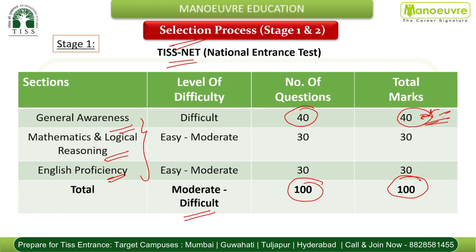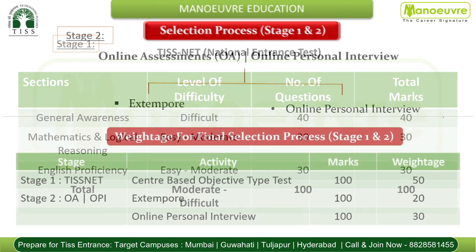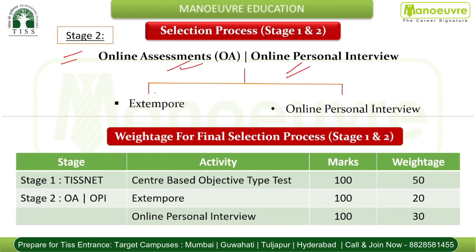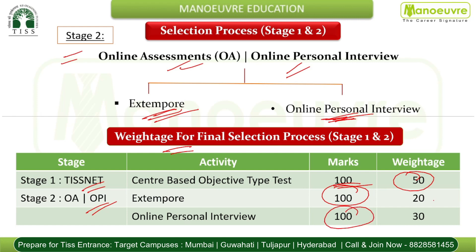Stage two of the TISS selection process involves an extempore and an online personal interview. If you are not shortlisted from stage one, you are not eligible to pursue the program — so stage one is equally critical. The weightage for final selection is: TISSNET objective test — 50 marks (100 marks scaled); Extempore — 20 weightage (100 marks); Online Personal Interview — 30 weightage (100 marks). Make sure to take TISSNET preparations seriously and start right away.